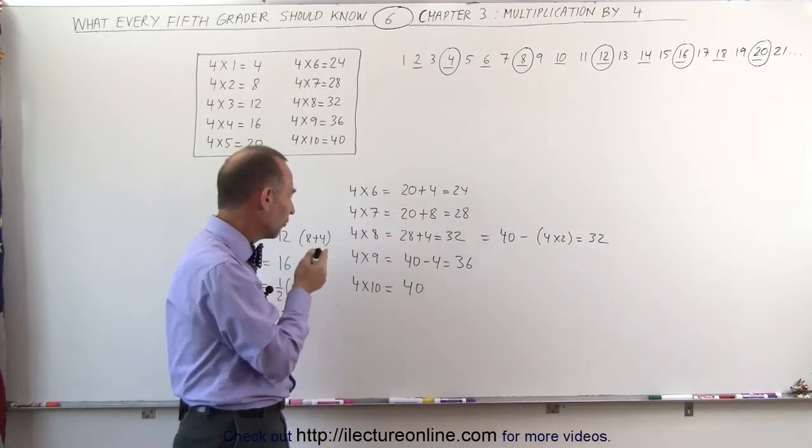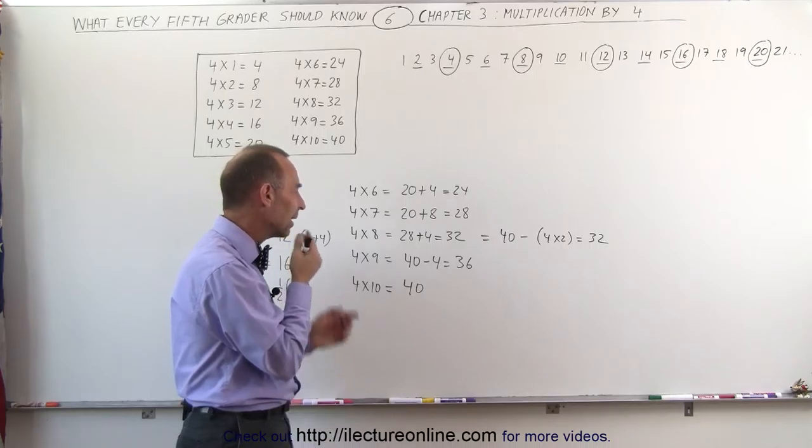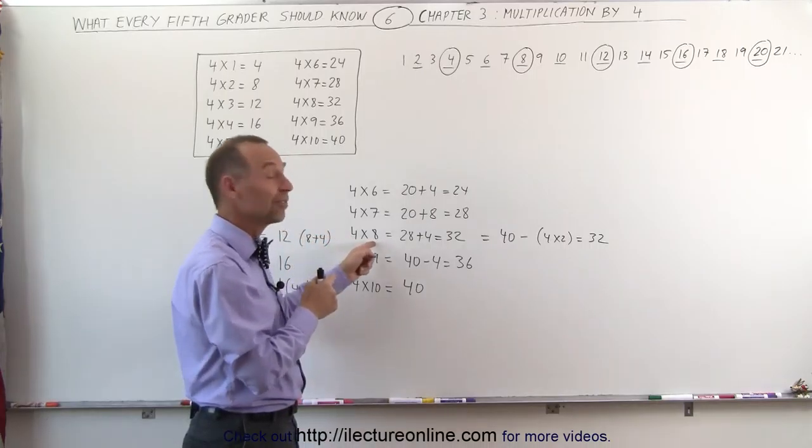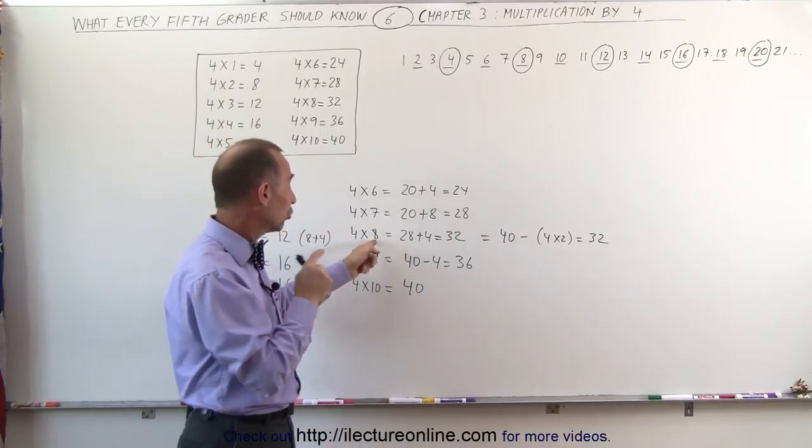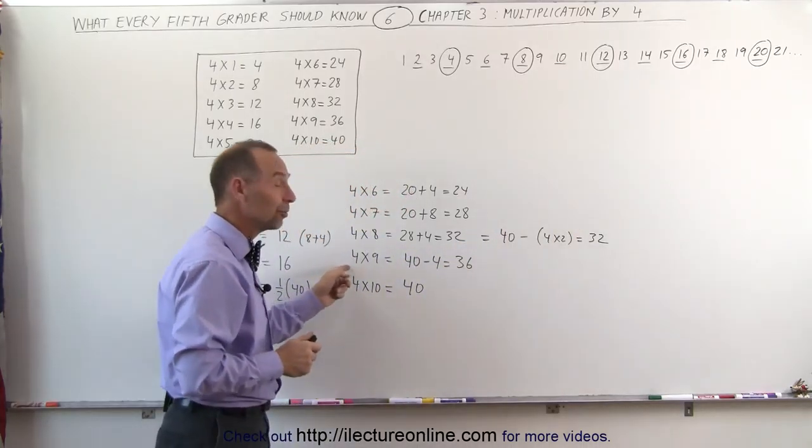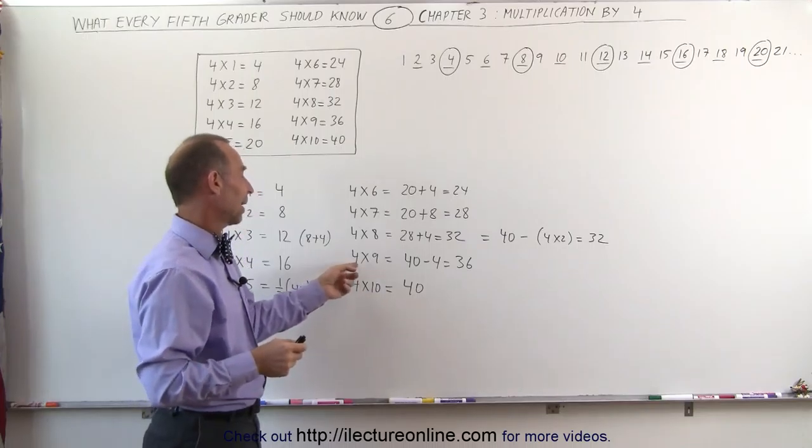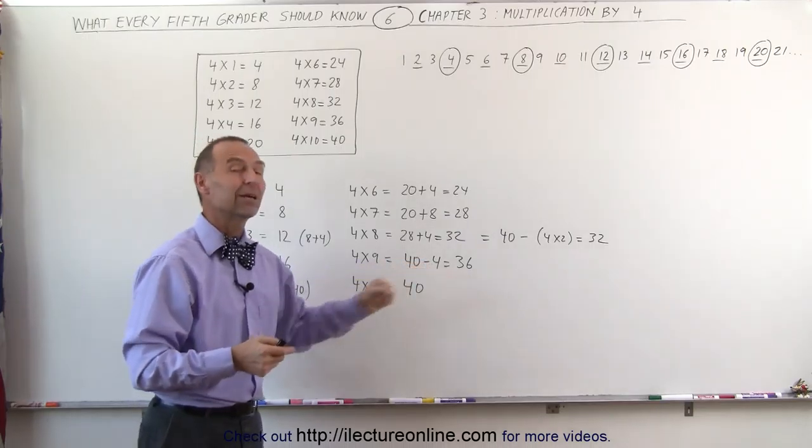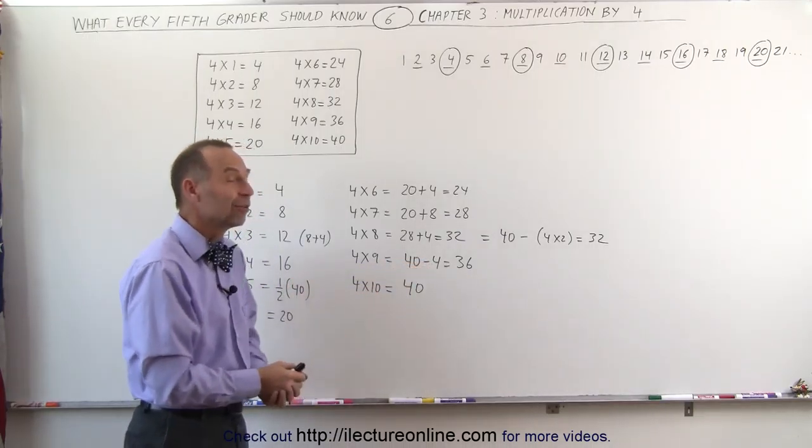But how do I remember 4 times 8? Well, I can say, that's equal to 4 times 10, which is 40, minus 2 times 4, which is 8. 40 minus 8, that is equal to 32. The next one was always easy. I went 4 times 10, and then I subtract the 4 from it, it gave me 36. And 4 times 10 is 40.